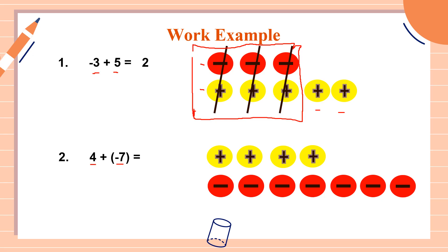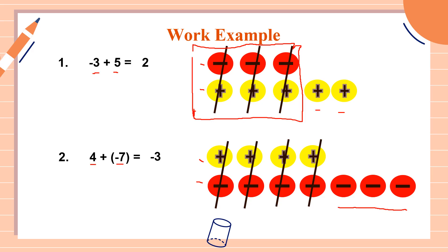Next step: remove the zero pairs. The first pair — remove it. The second — remove it. The third — remove it. And the fourth — remove it. Remember, a zero pair is one yellow chip and one red chip. After removing the zero pairs, count the remaining chips — we have three red chips. Red chips are negative, so our answer is negative three. Four plus negative seven equals negative three. For example number two, we have four zero pairs.